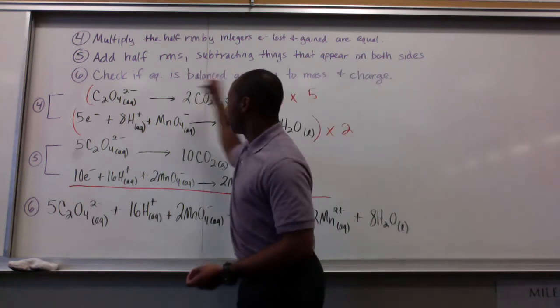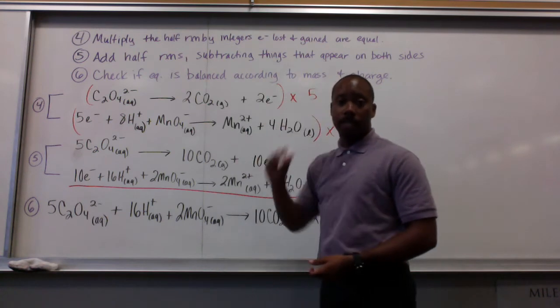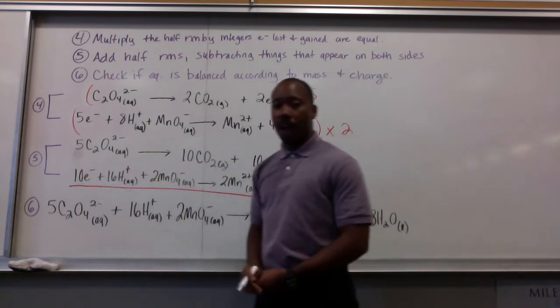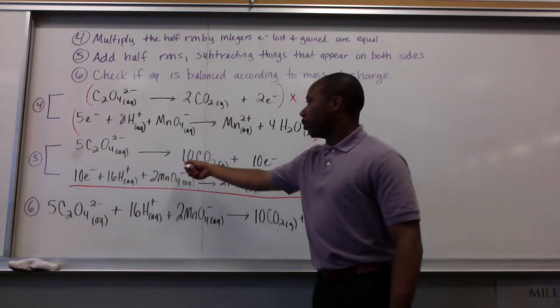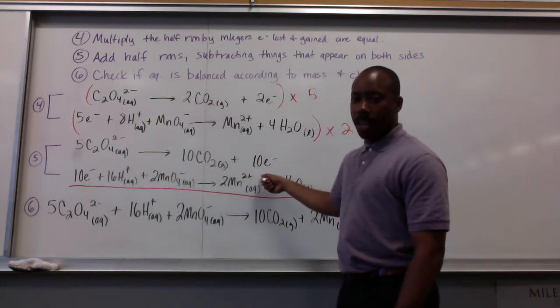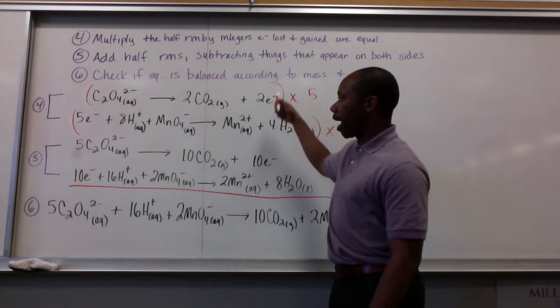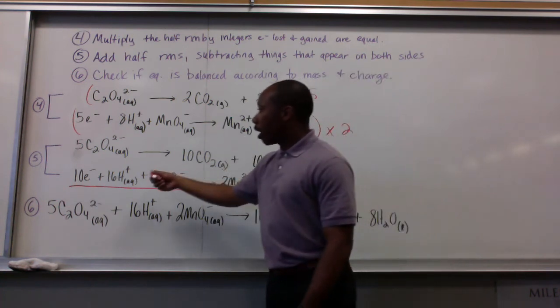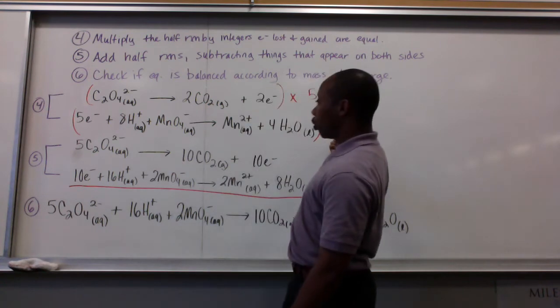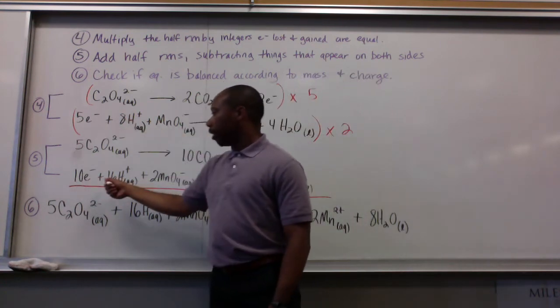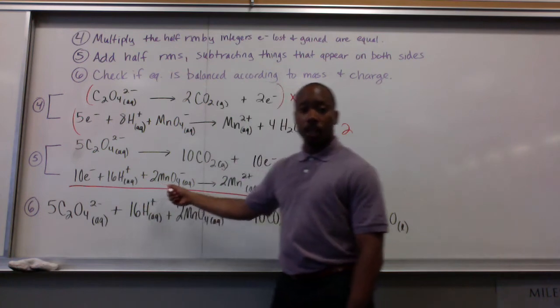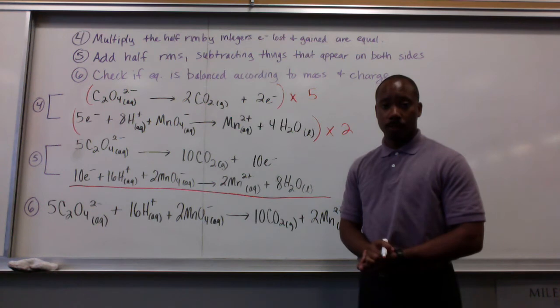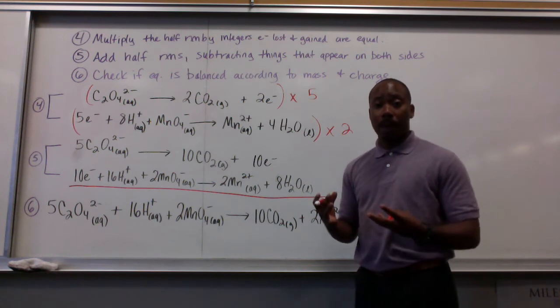This 5 is distributed into each quantity that's there, each substance that's there. When we do that, we get our result here in step 5. We get 5 oxalates going to 10 carbon dioxides and 10 electrons for our top reaction here, our oxidation step. And for our reduction step, we have to multiply everything times 2. 5 times 2 gives us 10. And then 16 H+, 2 permanganates, 2 manganese 2+, and 8 water molecules. Once we have those electrons balanced, we go to step 5.